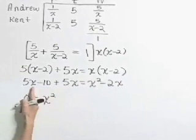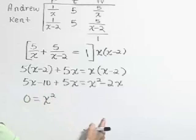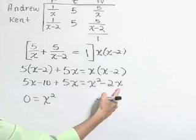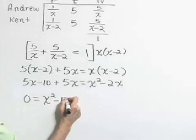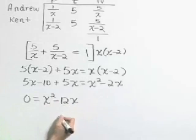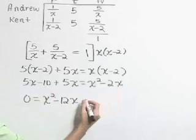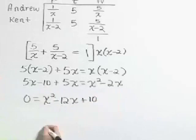On the left, we have a combined 10x, subtracted over gives negative 2x and a negative 10x is negative 12x. And let's add that 10 to both sides as well to get a plus 10. So we have 0 equals x squared minus 12x plus 10.